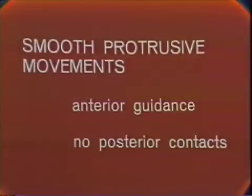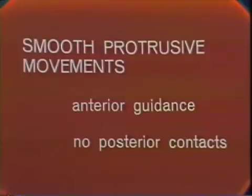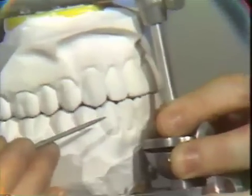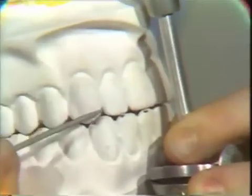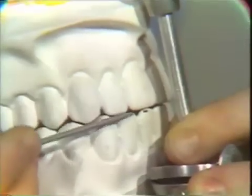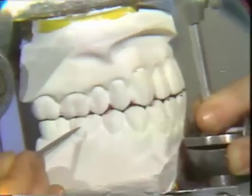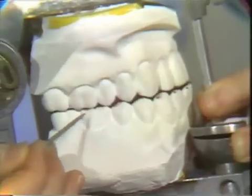The third criteria for healthy occlusion would be smooth protrusive movements, with the guidance on the anterior teeth and no posterior contacts. These models illustrate the contact in the incisor area and the absence of contact in the posterior segments.